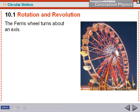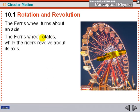Let's look at a Ferris wheel. It turns about an axis—here's your axis right here. The Ferris wheel itself rotates because the axis is within the Ferris wheel.